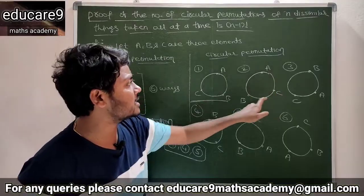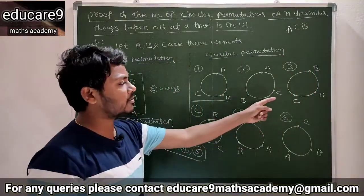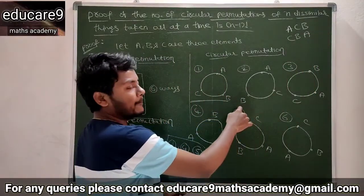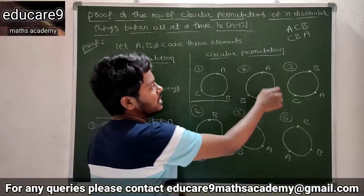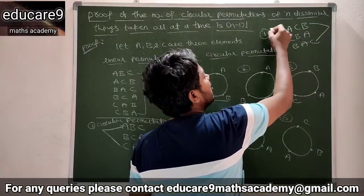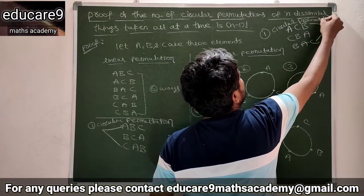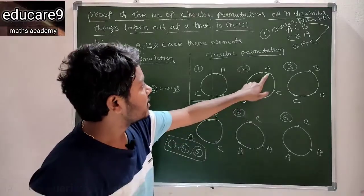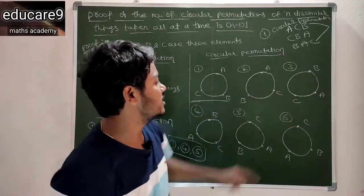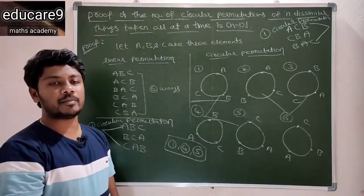Once you have the second arrangement A, C, B — you can start from A, giving A, C, B. Or you can start from C, giving C, B, A. Or you can start from B, giving B, A, C. These three linear permutations are equal to one circular permutation.